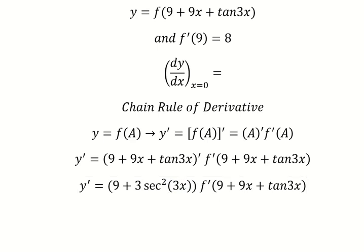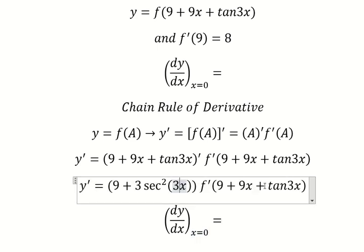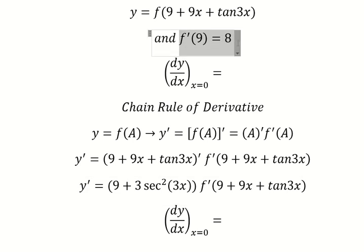So the question asks to find this one. So now if I put 0 in here, here, and here, we can see that this one we have 1. This one we have 0, 0, so we just have only the first derivative of F at 9. So we have this here.